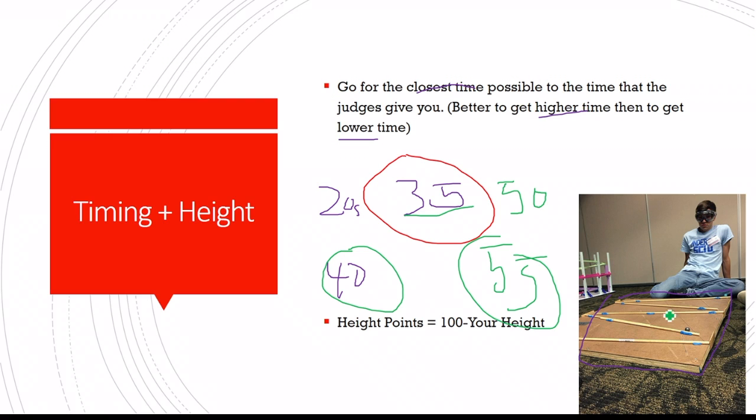And then the height points, if you, again, look at this picture here, probably this is like, I don't know what, 20 centimeters. So you get 80 points. But if you go up to the highest 80 centimeters, you only get 20 points. But you can't really do jumps with that. And jumps are worth a lot of points that I'll be talking about soon. So you probably want to go somewhere in between that.